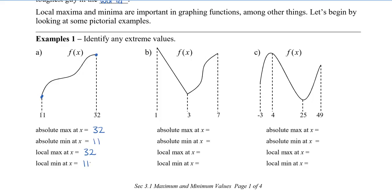Let's take a look at a different example. For the absolute max, the largest y value we can see is the highest point, so the absolute max occurs at x equal to 1. The absolute min occurs at x equal to 3, which is the lowest point. For a local max, we can see that both when x is 1 and at x is 7 there is a kind of high point. So local maxes occur at x equals 1 and also x equals 7. And a minimum occurs only at x equals 3.